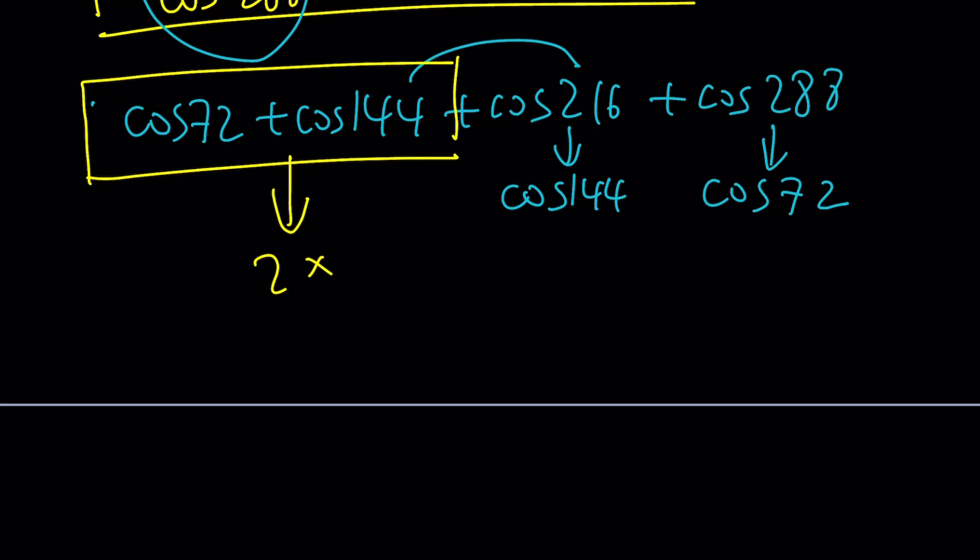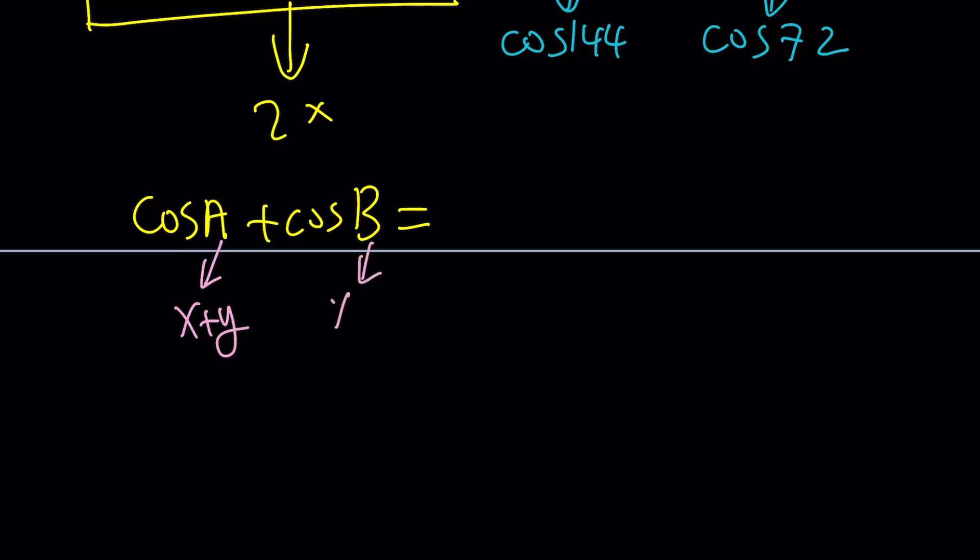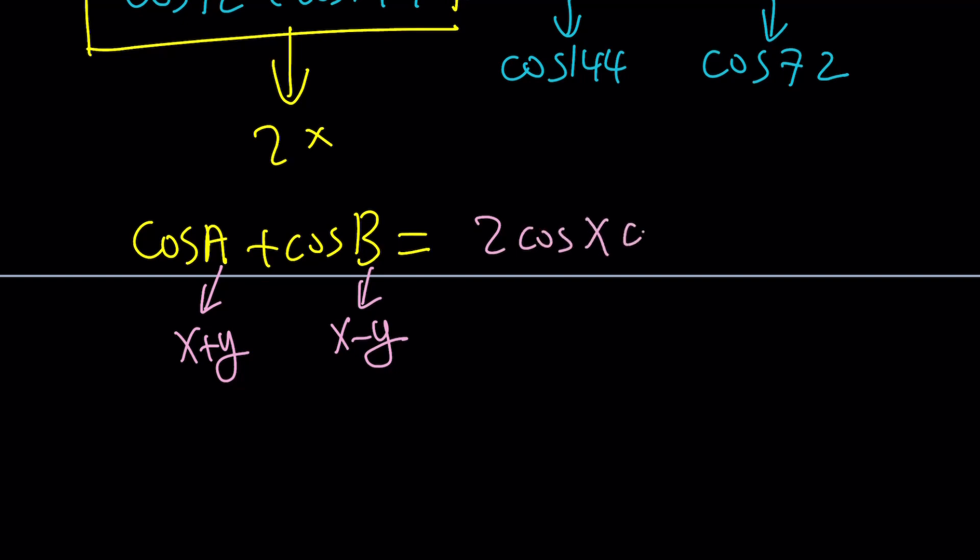But again, the question is, how do you add those two things? We have a formula called sum to product, which kind of gives us this. And that's kind of hard to memorize, right? But if you really want to come up with a formula for this, I would highly recommend that you replace a with x plus y, and this with x minus y. And then from there, you're going to realize that the sin x sin y is cancelled out. You end up with 2 cos x cos y.